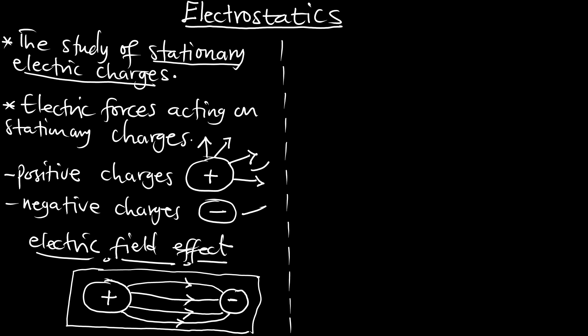As the positive charge — let's call it A — is having influence on the negative charge B, there is a force causing this action. We can see the lines of force causing the effects from A to B, and this is what we call the electric force. There is either a pull from the positive to the negative, or there is a repulsion between them.